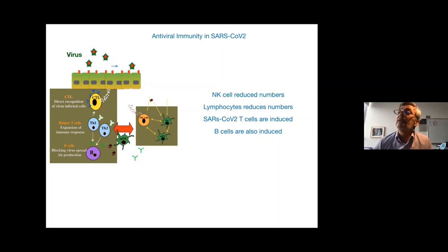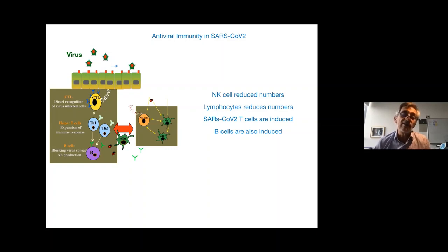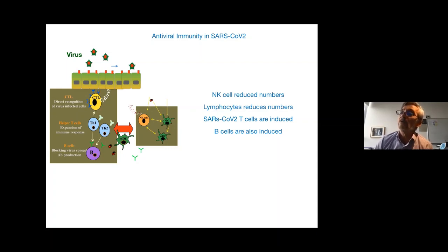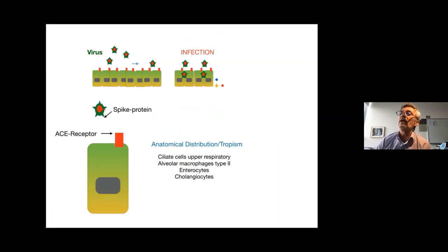What we can say is that NK cells are reduced in number in patients with COVID-19. In severe cases, lymphocytes are also reduced. Just a couple of weeks ago, some papers demonstrated that during COVID-19 there is induction of SARS-specific, antigen-specific T cells. We also know that B cells are being induced. We know much more at the moment about antibody and B cells because most of the work is focused on understanding how we can block the interaction between the virus and the receptor.